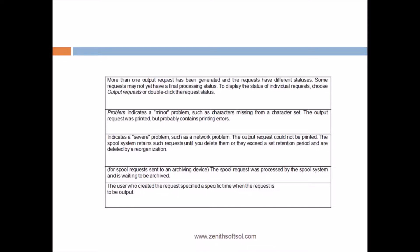Problem will be minor, problems will be major. So problems indicates a minor problem such as characters missing from a character set. The output request was printed but probably contains printing errors. So what happens basically, for example you are trying to print on A4 size, but it's printing on different format. In this what happened, the user doesn't know because he doesn't have the technical knowledge, but he just wants the printer on that page what he was suggesting. So you as a SAP business consultant, you need to get the information from the user, what exactly he is trying to print on the page, for which paper size, so you can go and set the printer size for that particular user.